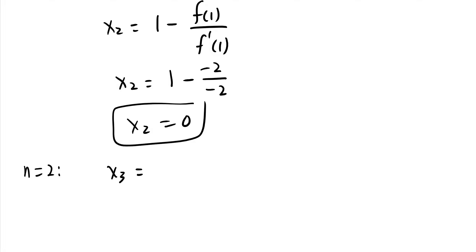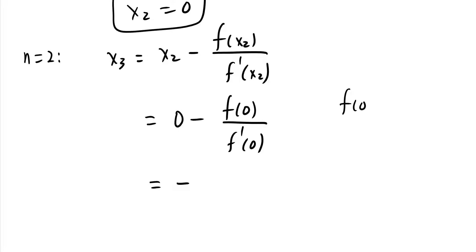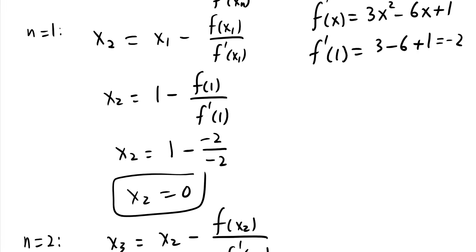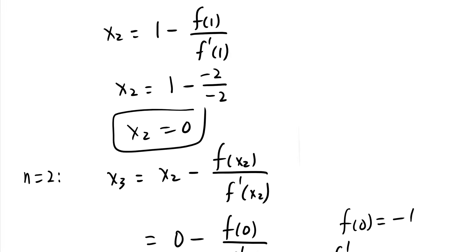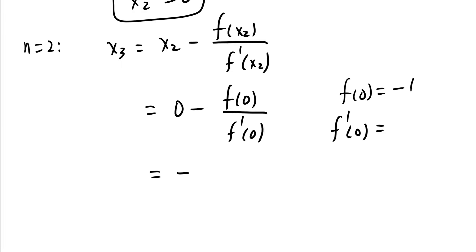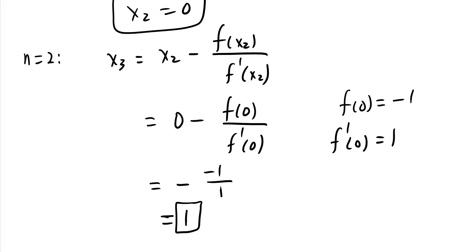Now find x₃ with n = 2: x₃ = x₂ − f(x₂)/f′(x₂) = 0 − f(0)/f′(0). We find f(0) = 0 − 0 + 0 − 1 = −1, and f′(0) = 3(0)² − 6(0) + 1 = 1. So x₃ = 0 − (−1)/1 = 1. We're back to 1 — which is where we started. So x₁ = 1, x₂ = 0, x₃ = 1, and the sequence bounces back and forth.